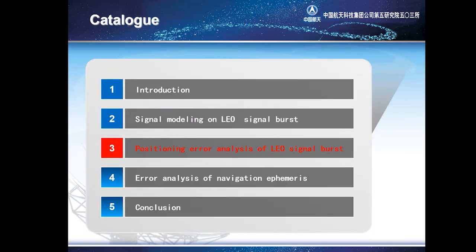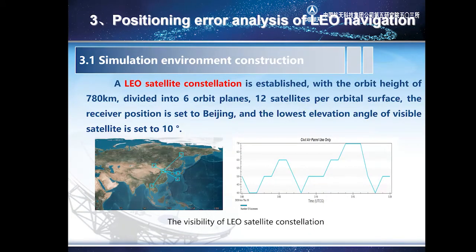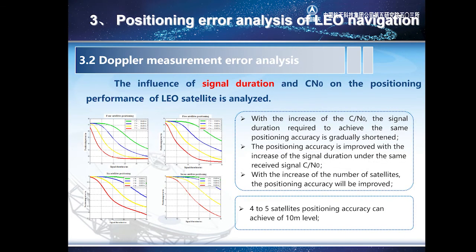The third part is positioning error analysis of LEO signal bursts. The LEO constellation system is established and the positioning performance is simulated and analyzed. In the simulated LEO scenario, the orbital height is set at 780 km, which is divided into 6 orbital planes with 12 satellites per orbital plane. The visibility is analyzed first, and the orbital parameters of multi-coverage periods are derived. Then the influence of signal duration and carrier-to-noise ratio on positioning performance is analyzed.